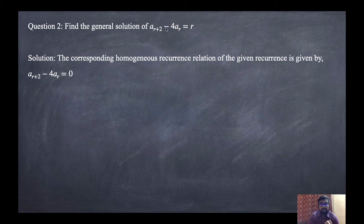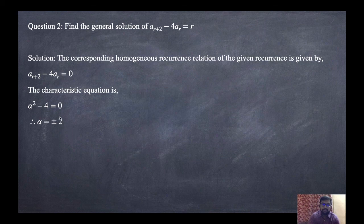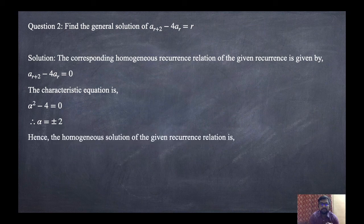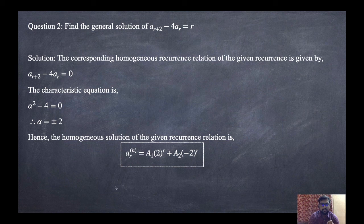The characteristic equation is alpha² minus 4 equals 0, giving alpha equals plus or minus 2. The roots are distinct, so the homogeneous solution is ARH equals A1·2^R plus A2·(-2)^R.